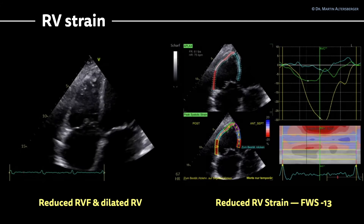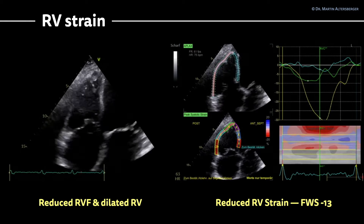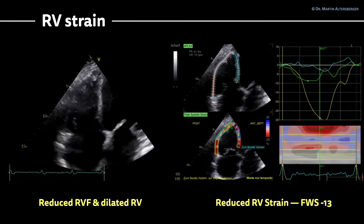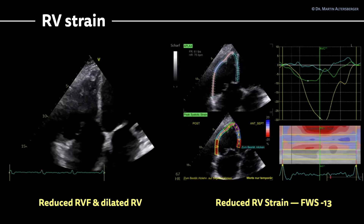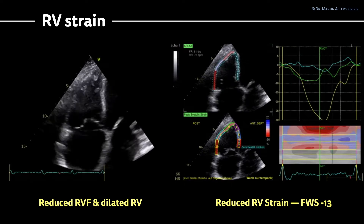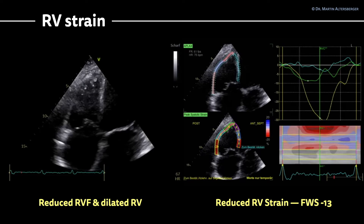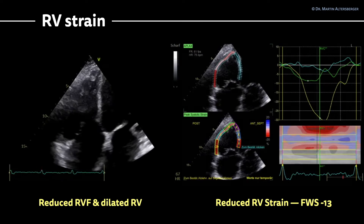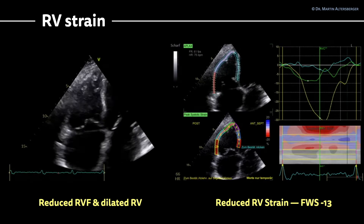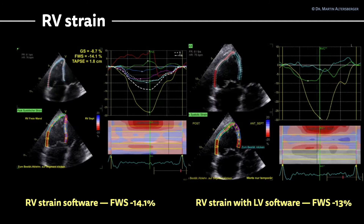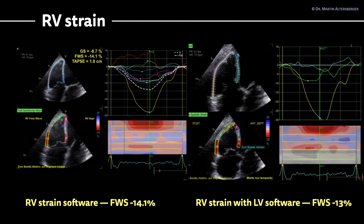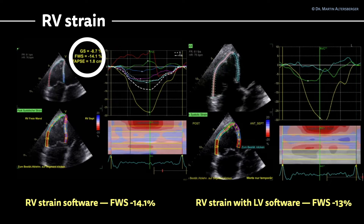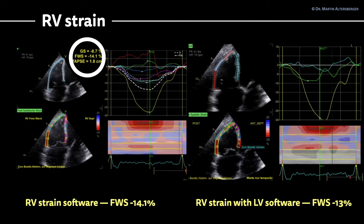Moving on to right ventricular strain — as shown in the first part of this case — you can use left ventricular strain software to evaluate the right ventricle. Here, I used an apical long axis software to grade the RV strain imaging. The overall free wall strain, meaning the mean value of the three segments of the RV free wall, was minus 13. The B-mode image also confirms that RV function is reduced and the right ventricle is dilated. When performing RV strain imaging with a designated RV strain software, the free wall strain is minus 14.1 — approximately the same value as calculated with the LV software.